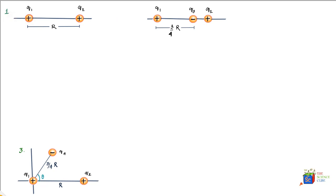The second situation has q1 and q2 at their respective positions, but a new charge q3 has been introduced and it is a negative charge at a distance of 3/4 r from q1. Remember q2 is at a distance r, and all the values of q1, q2, q3, and r are given in the problem.